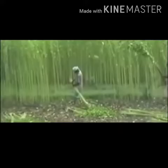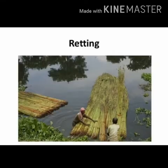Jute seed is sown during monsoon in warm weather. It grows about 8 to 10 feet in height. Jute fiber is harvested in West Bengal and Assam in India. We get the fiber from the stem of the plant. After harvesting, the stems are dried and tied into bunches.